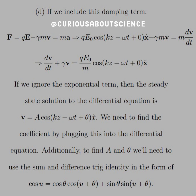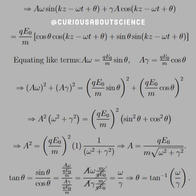To find A and θ, we use the sum and difference trig identity: cosine U = cosine θ · cosine(U + θ) + sine θ · sine(U + θ). We plug the steady state solution form into the equation and equate like terms from the left-hand and right-hand sides.